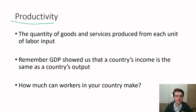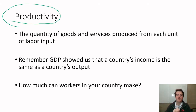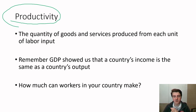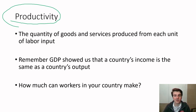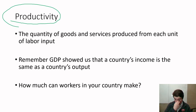Mankiw proposes that productivity is going to be perhaps our main explanation of these differences across countries, referring to productivity as the quantity of goods and services produced from each unit of labor input. What does an additional worker do to how much stuff you can make in these different countries? How effective are our workers? Remember, GDP showed us that a country's income is essentially the same as output — spending and incomes are flip sides of the same thing. So it's a question of how much your workers can make in terms of both productive output and dollar figures.